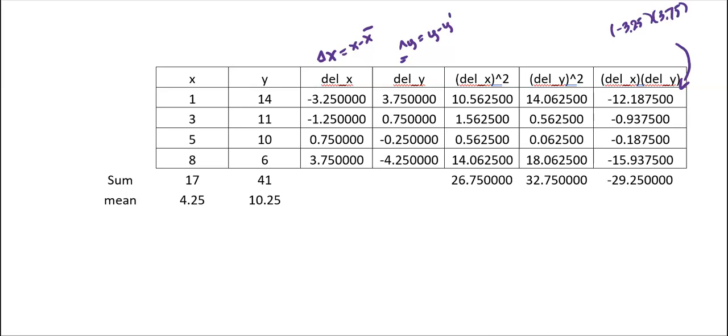At the bottom of the table, the sum or summation, the number 17 is the summation of x. And 4.25, that is x̄, which is from 17 divided by four data points. And 10.25, that is ȳ, computed by using the sum of y, which is 41, divided by the total number, which is 4, to get 10.25.